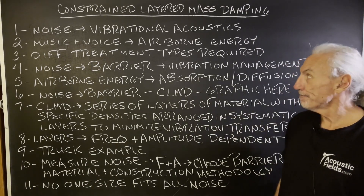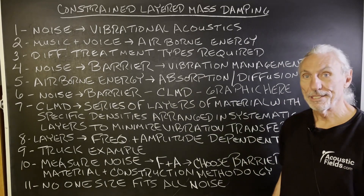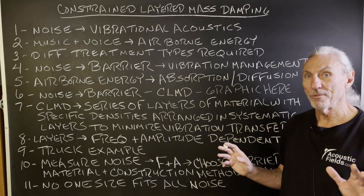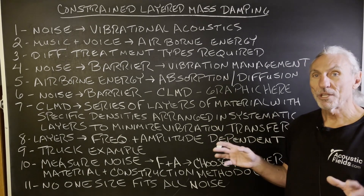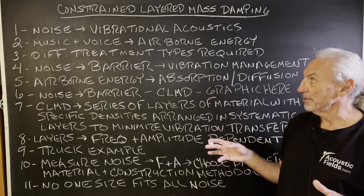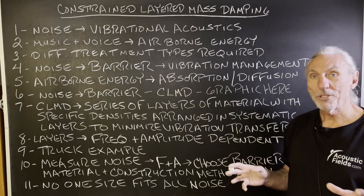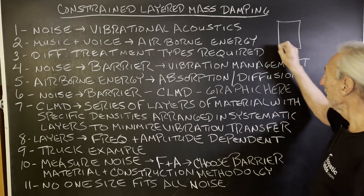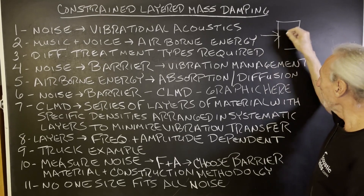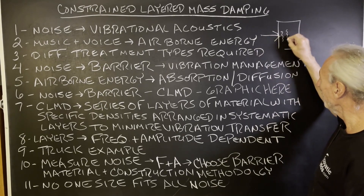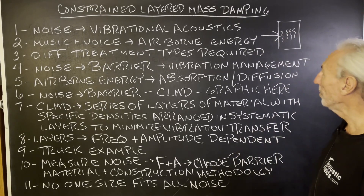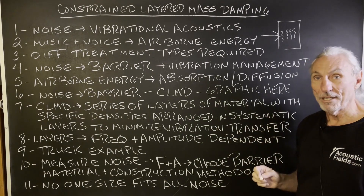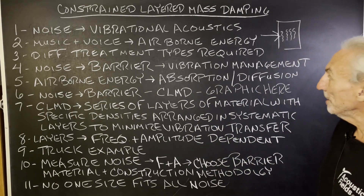Let's talk about noise and vibrational acoustics. There are two types of energy we have to think about when dealing with noise: airborne energy and vibrational acoustics. Music and voice in our rooms is airborne energy. But vibrational acoustics starts out as airborne energy from a source, strikes the wall, and then turns into vibrational acoustics. It's no longer airborne energy — it's changed, and we have to treat it differently.